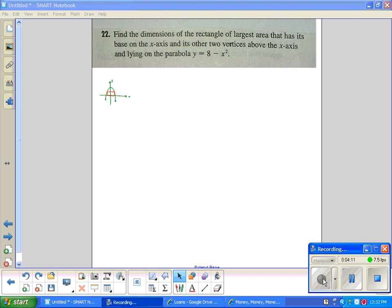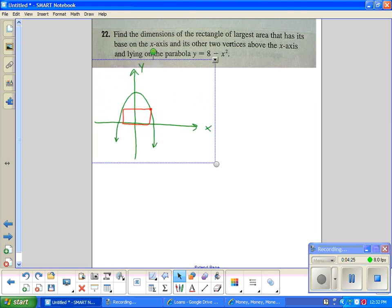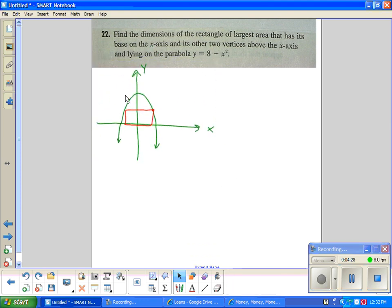Alright problem 22. Find the dimensions of the rectangle of largest area that has its base on the x-axis and its other two vertices above the x-axis lying on the parabola y equals 8 minus x squared. I like a little sketch here. So I make a little sketch of the parabola, 8 minus x squared shown in green. And then I sketch the rectangle with the vertices on the x-axis and the other two vertices on the parabola. Since it is symmetrical around the y-axis, I'm going to call this point out here x, y.